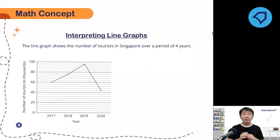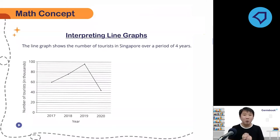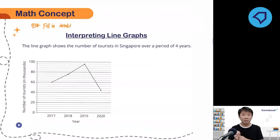Pause here. Before you even do anything, before you even read the questions, what I want you to do first and foremost is fill in all the numbers. You must always fill in the numbers — that is tip number one for today. Fill in the details on the graph first, then start reading the question.